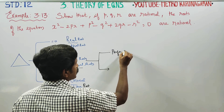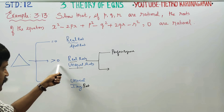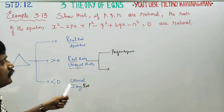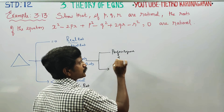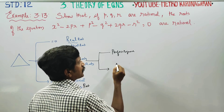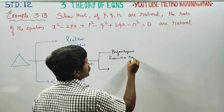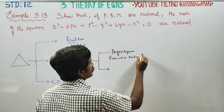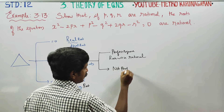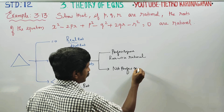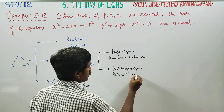Now, if delta is a perfect square and delta is greater than 0, once that perfect square is there, I have a square root, and the roots will be rational. If it is not a perfect square, the roots will be irrational.